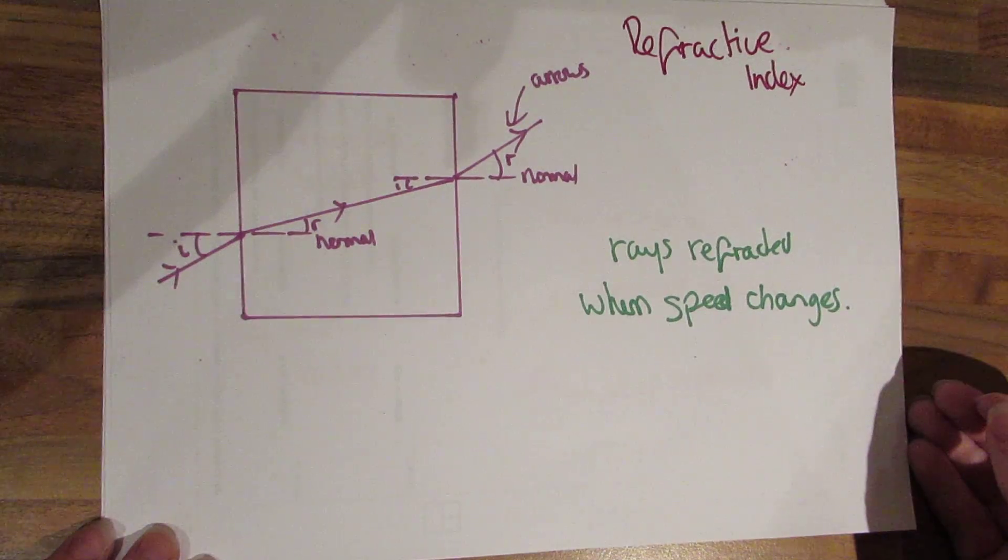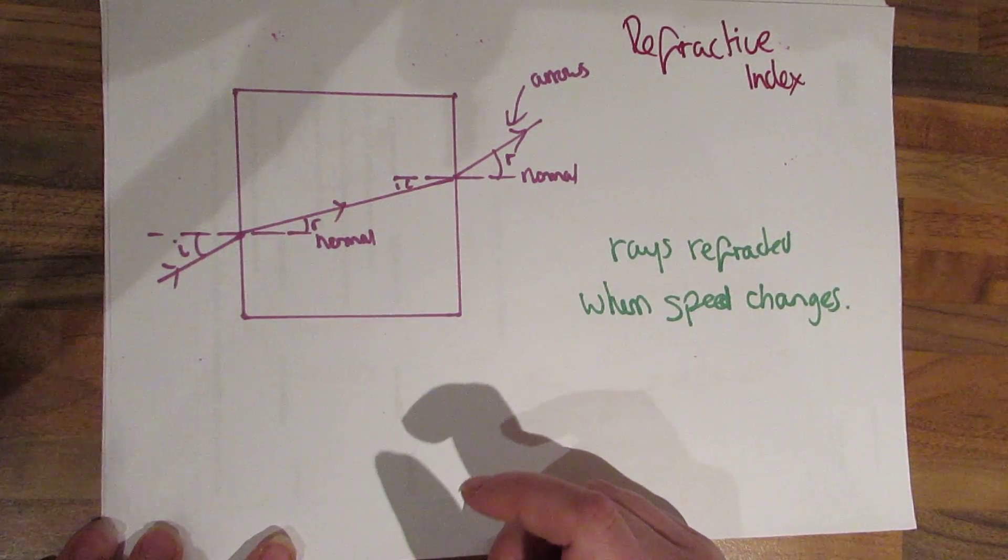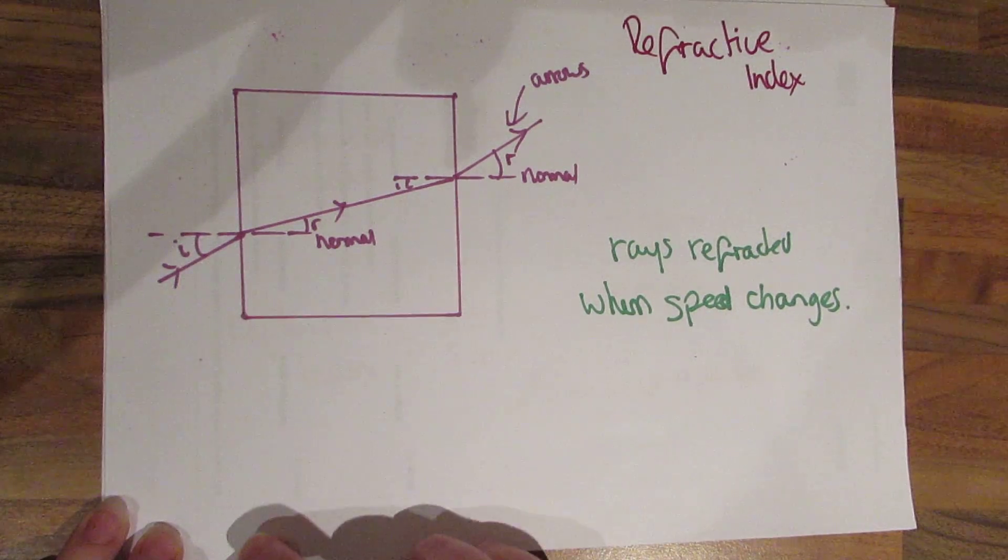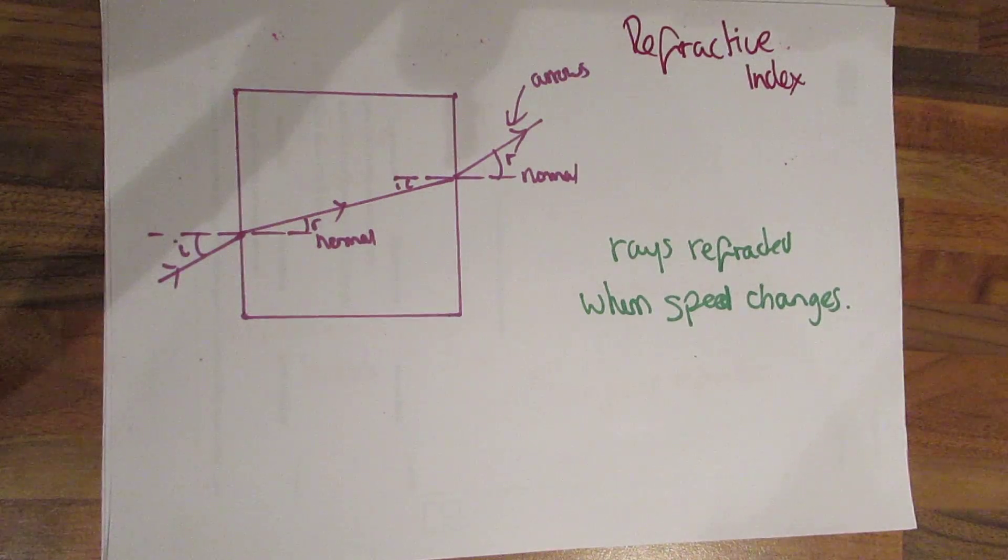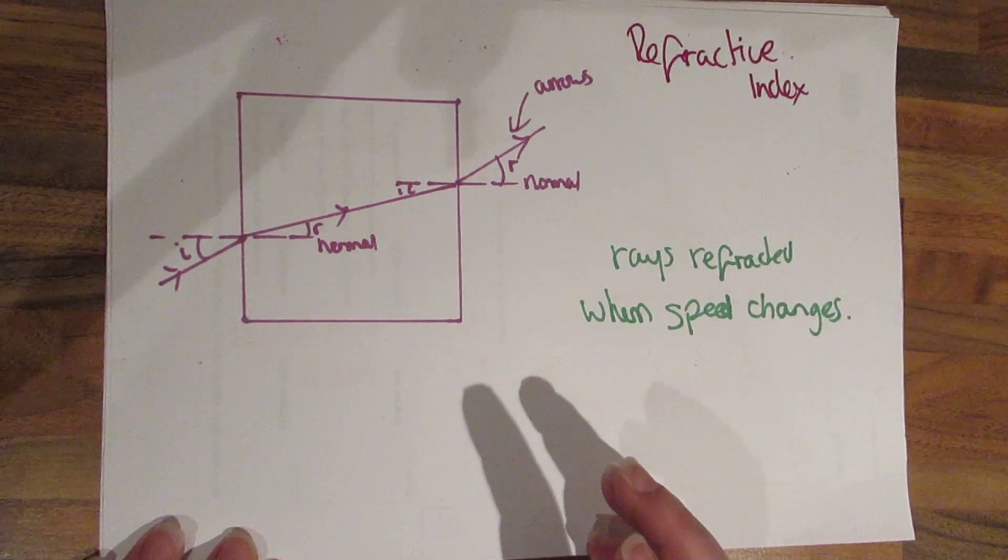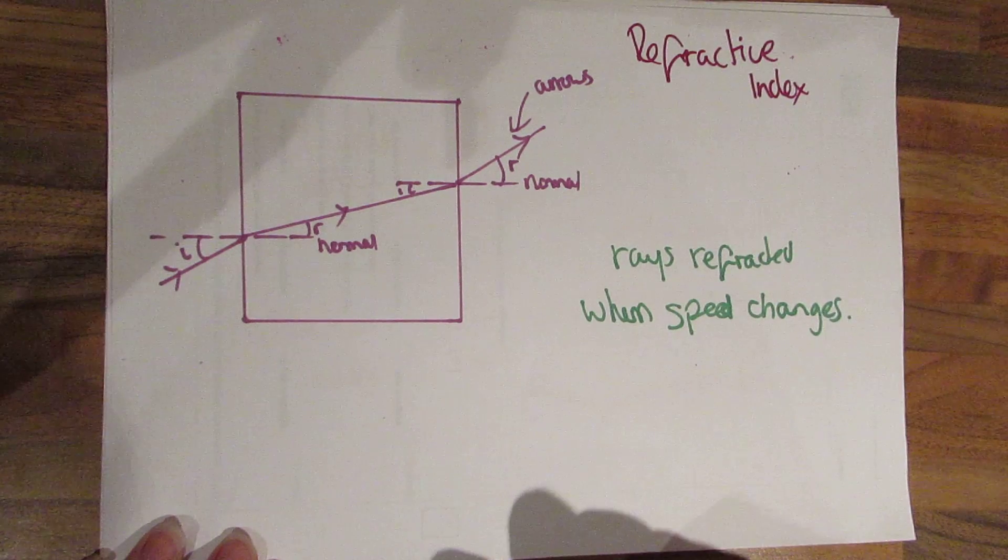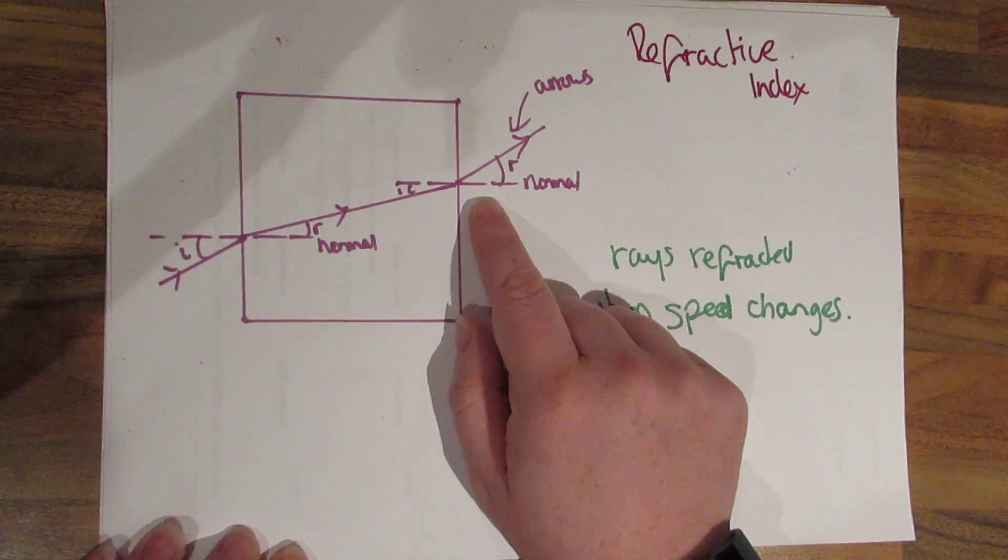Refractive index. So this is our block of plastic, glass or water. As a ray comes in when it changes from slow to a fast or a fast to a dense, from a fast to a slow medium it's going to change its speed. This happens when there's a change in density of the mediums and the rays get refracted.